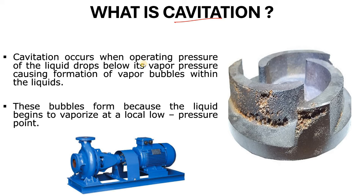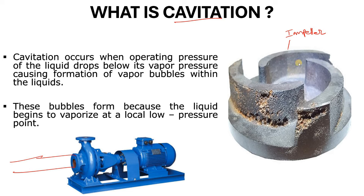So, what is cavitation? Cavitation occurs when the operating pressure of the liquid drops below its vapor pressure, causing the formation of vapor bubbles within the liquid. Let's suppose this is your centrifugal pump with an impeller. At the eye of the impeller, the pressure is very low because of the reduced area. As the fluid goes from the impeller to the casing and then to the discharge side, the area increases, and the pressure increases. The rotating impeller helps convert the energy.